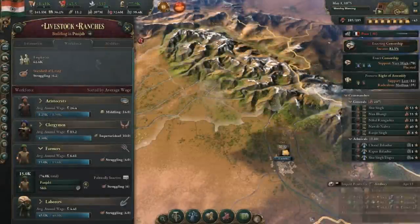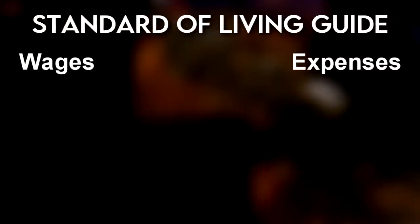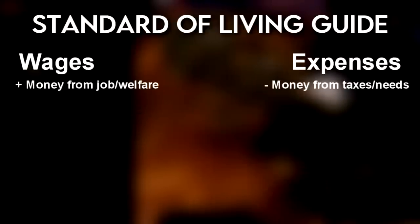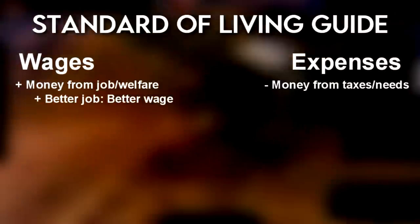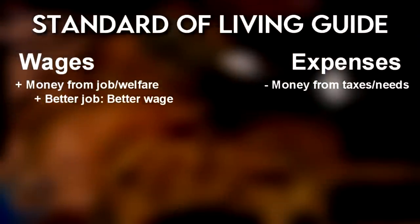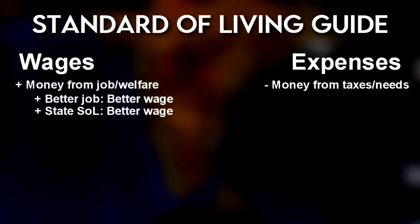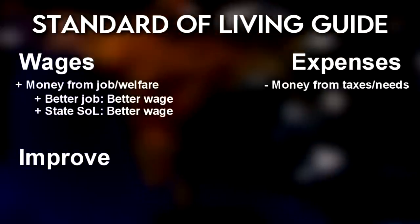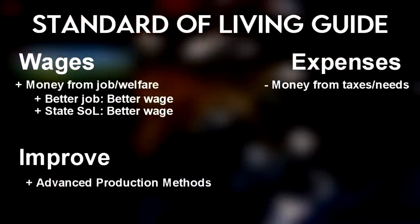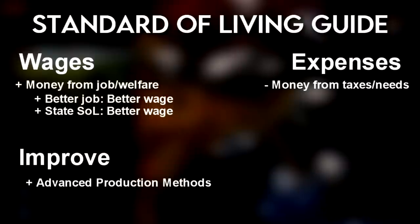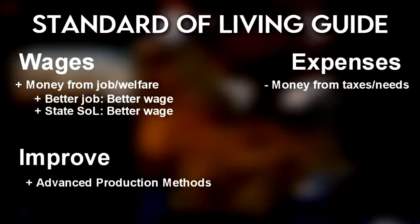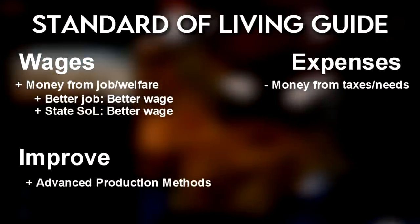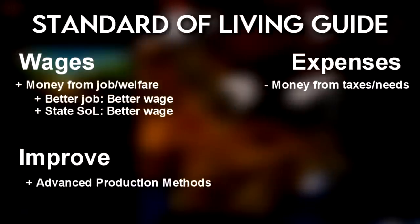Standard of living is based on exactly two things: wages and expenses. The amount of money that a pop makes at their job is weighed against how much they spend on taxes and goods. Wages from a job are based on what the job is, with higher qualification jobs generally paying higher amounts, and the wealth of the state the job is in. The higher the standard of living of a state, the higher all wages go in that area. The player manipulates jobs by using production methods that generate higher paying jobs — for example, a tool workshop that uses steel tools creates machinists and engineers while reducing laborers.